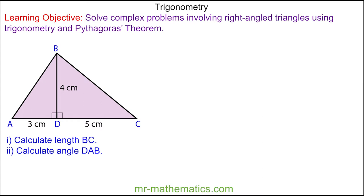Welcome to our lesson on solving problems involving right angle triangles. In this question we've been asked to work out the length of BC, which is this length here, and because it is opposite the right angle, this is the hypotenuse.